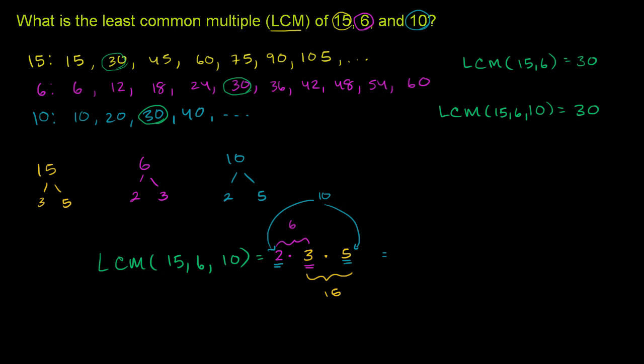And so if you multiply this out, you will get 2 times 3 is 6. 6 times 5 is 30. So either way, hopefully both of these resonate with you, and you see why they make sense. This second way is a little bit better if you're trying to do it for really complex numbers, where you might have to be multiplying for a long time. Both of these are valid ways of finding the least common multiple.